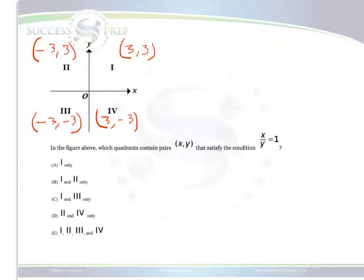At this point, we want to solve for what x over y would be in each case. In quadrant 1, x over y would be 3 over 3, which produces 1. In quadrant 2, x over y would be -3 over 3, which produces -1.